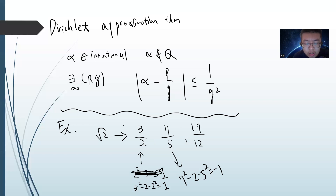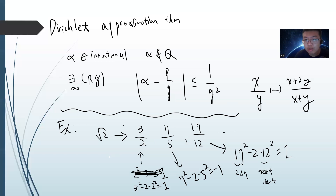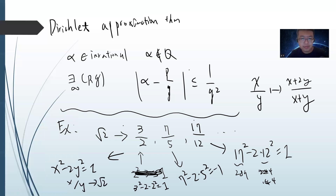So 17 comes from the rule: starting from x and y, you go to x + y, and then x + 2y. You can check that 17² - 2×12² = 289 - 288 = 1. And you keep going — this is called Pell's equation: x² - 2y² = 1. As x and y grow large, x/y approaches the square root of 2.